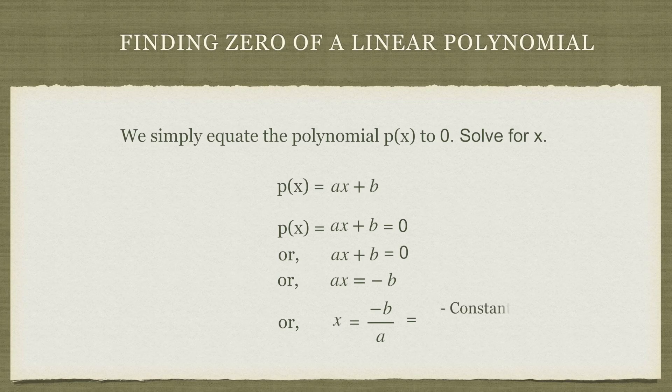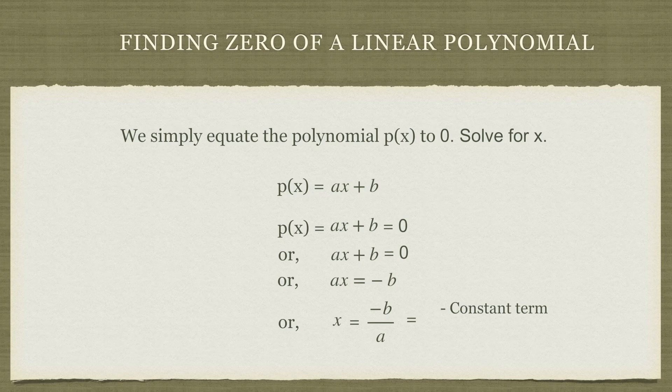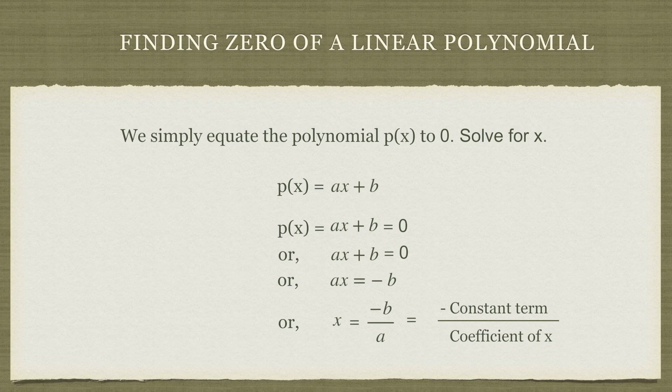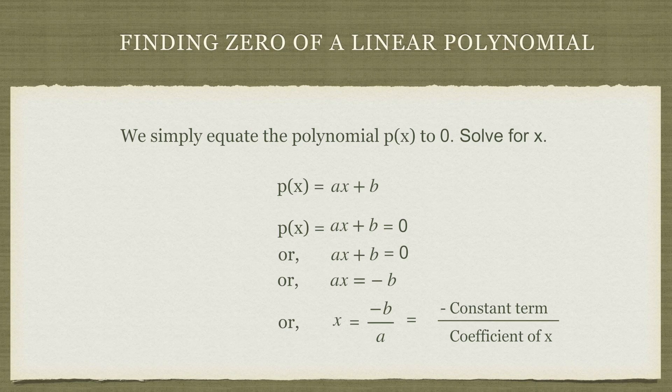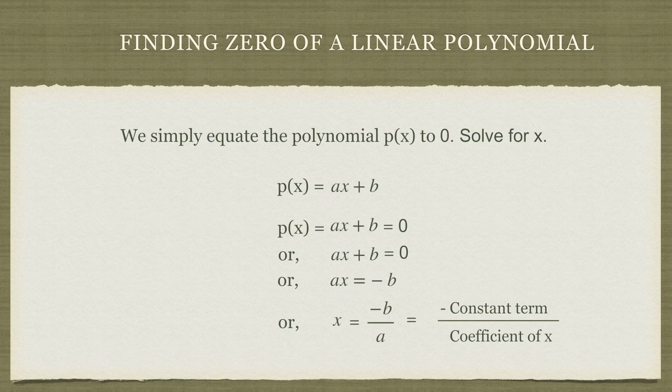Now what is b? b is the constant term. So we have minus constant term divided by a. And what is a? a is the coefficient of x. So the zero of a linear polynomial equals minus the constant term divided by the coefficient of x. This is how we find the zero of a polynomial, particularly the zero of a linear polynomial.